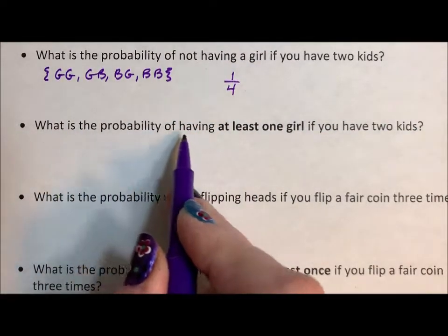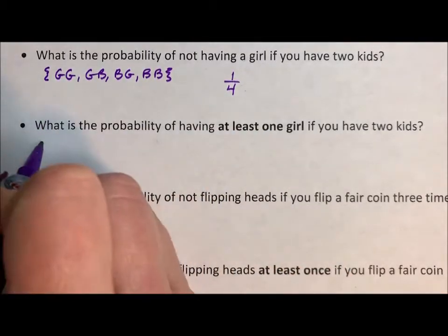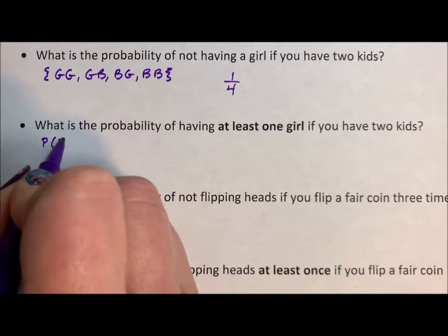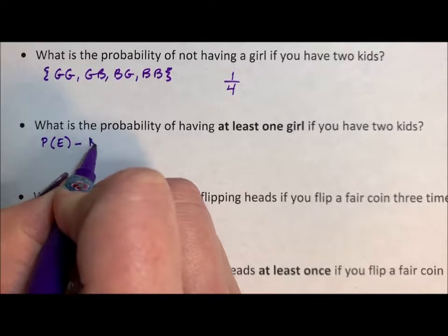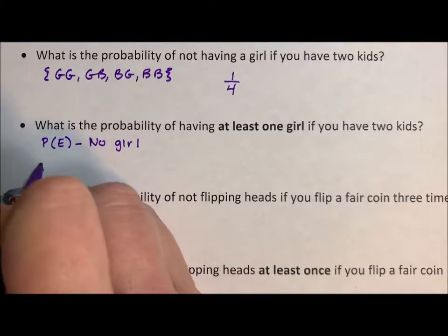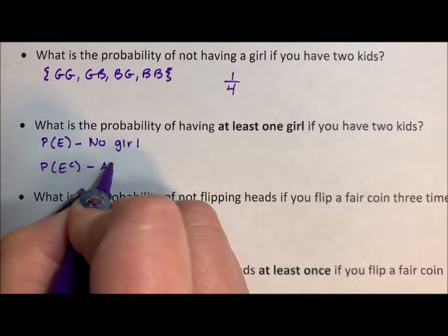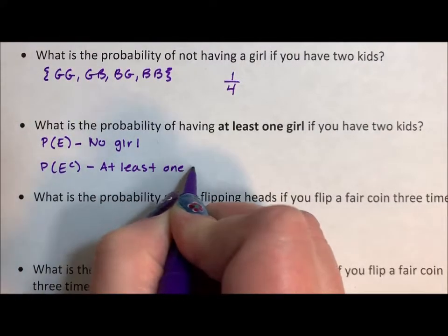What's the probability of having at least one girl? Okay, so the probability, P(E), is going to be defined as no girl. That's what we just did above. The complement of that is going to be at least one girl.